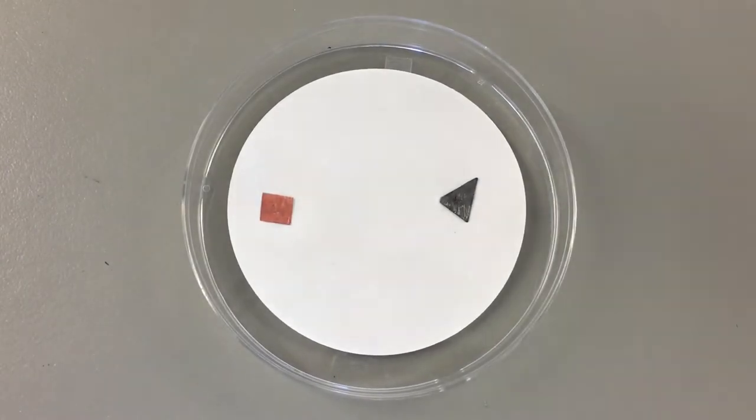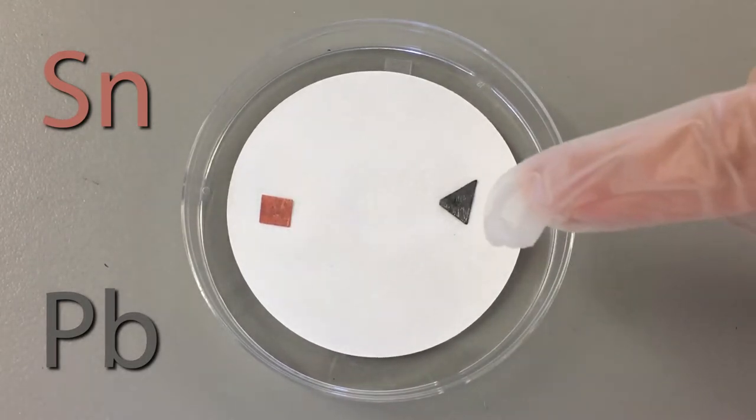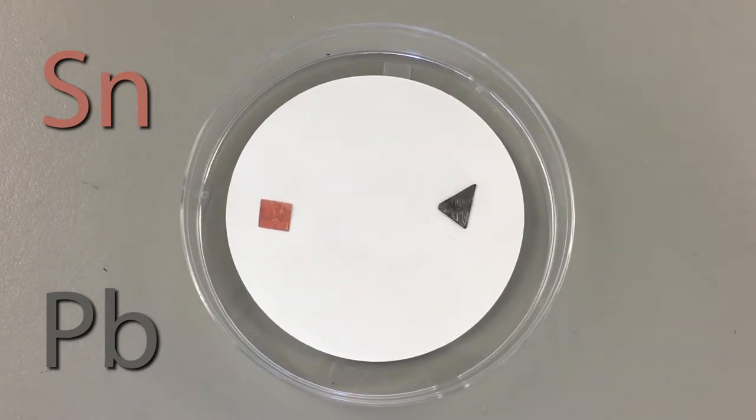Here we have tin and lead. The lead is our cathode and the tin is our anode. Electrons will flow from the anode to the cathode.